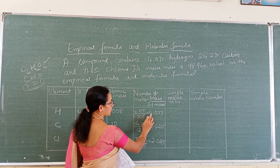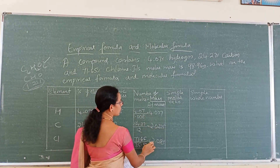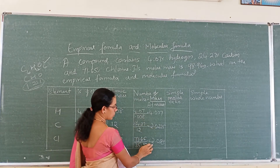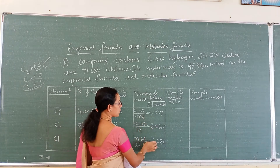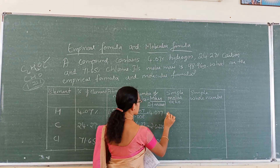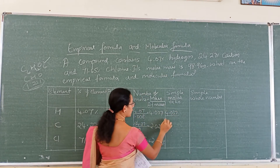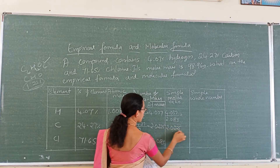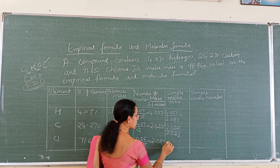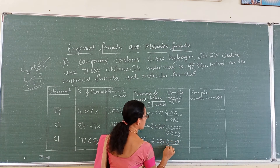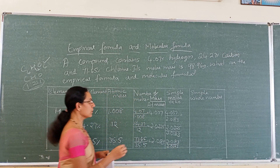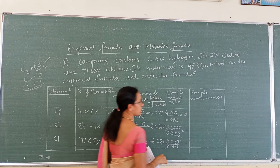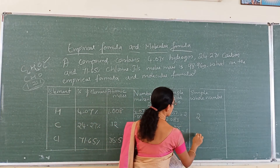We have three values: 4.037, 2.0225, and 2.0183. To find the simple molar ratio, divide each number by the least value, which is 2.0183. So: 4.037 ÷ 2.0183 ≈ 2, 2.0225 ÷ 2.0183 ≈ 1, and 2.0183 ÷ 2.0183 = 1. The simple whole number ratio is 2, 1, and 1.